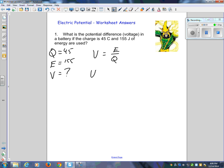Line up our equal signs. The energy is 155, the charge is 45. Get your calculator out and do that division. And you should get 3.4 volts, or 3.4 V.